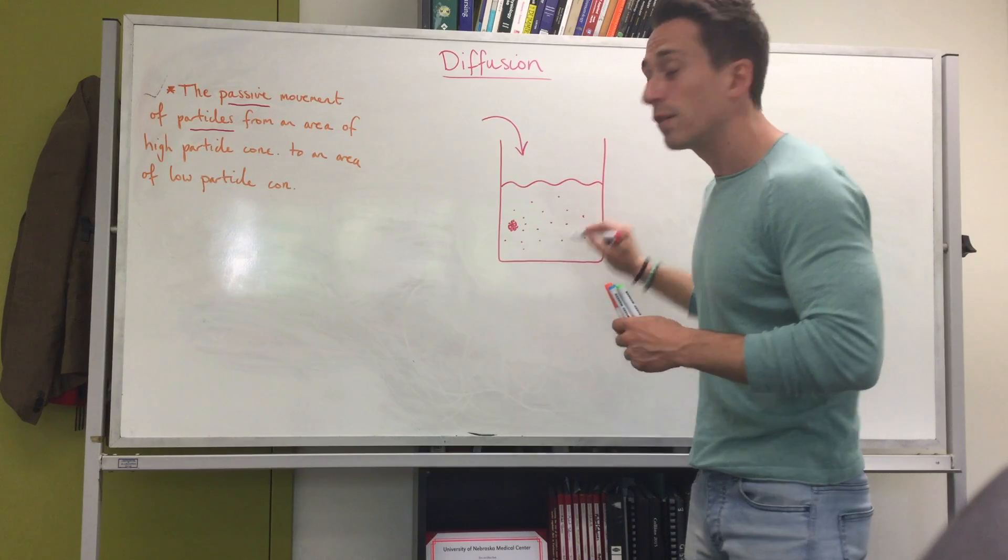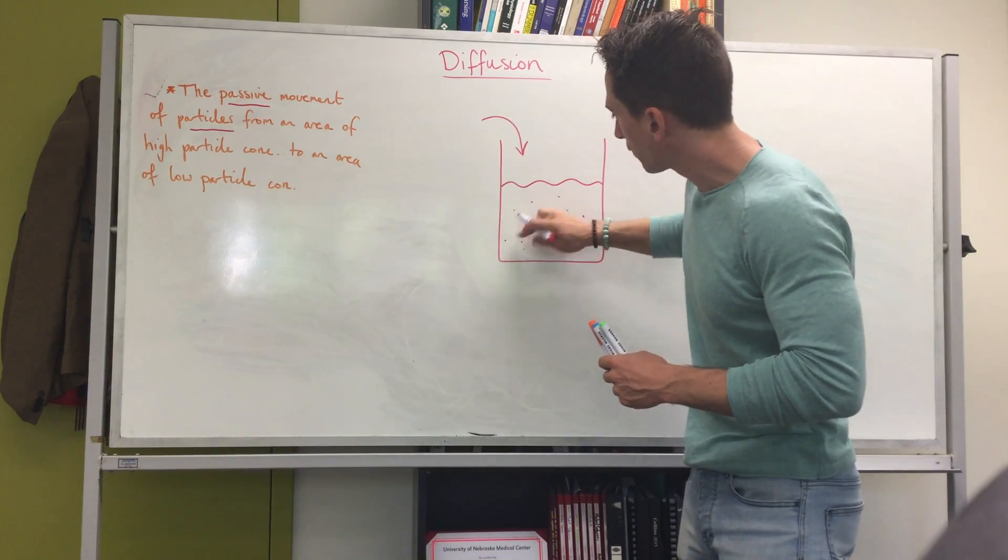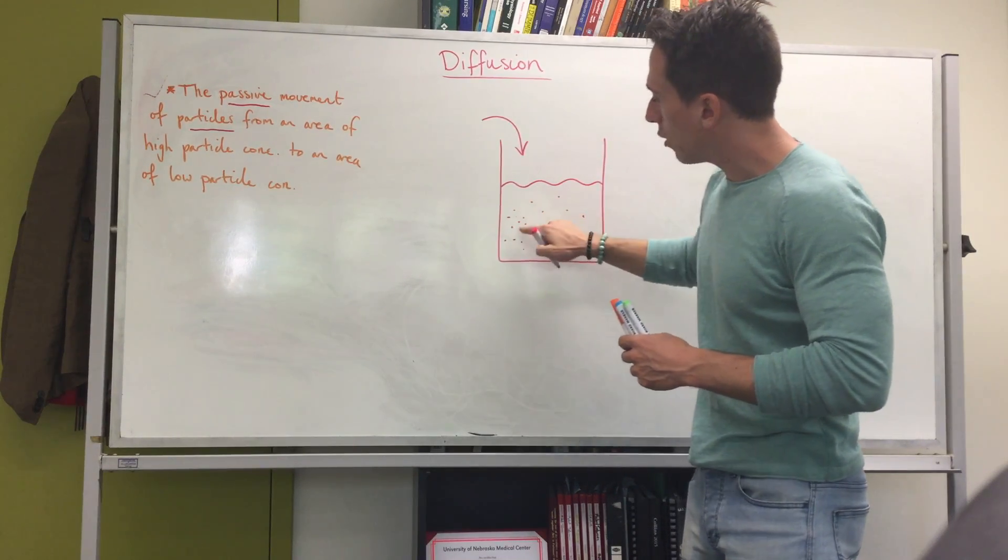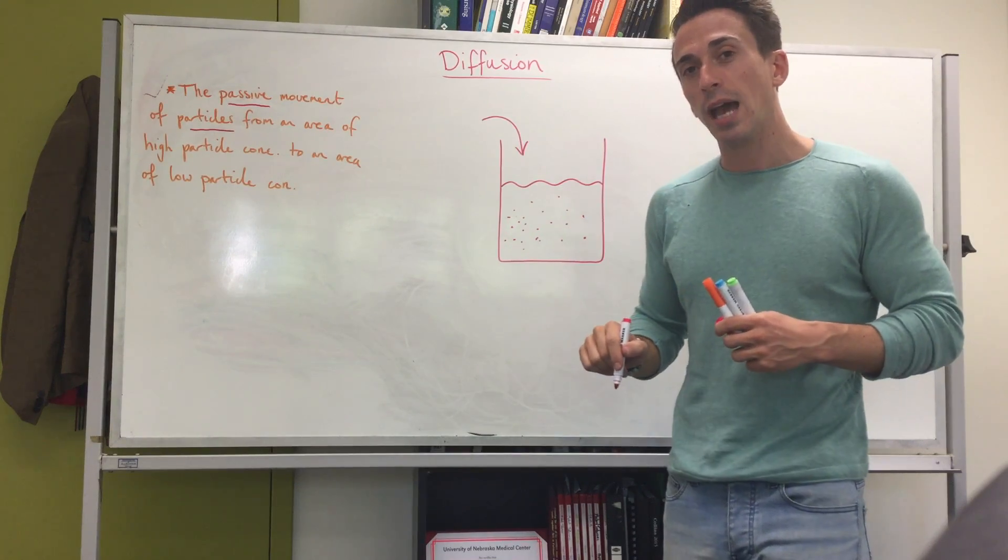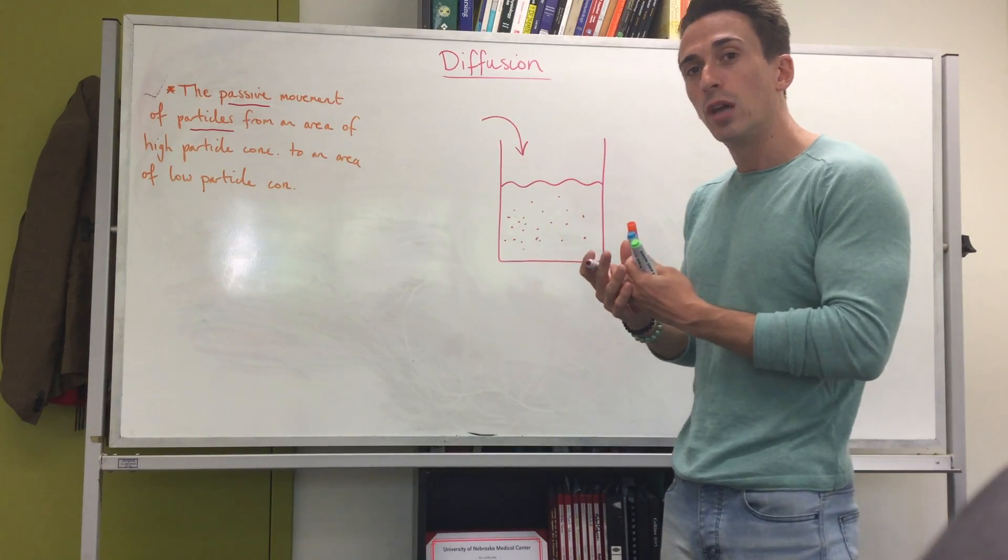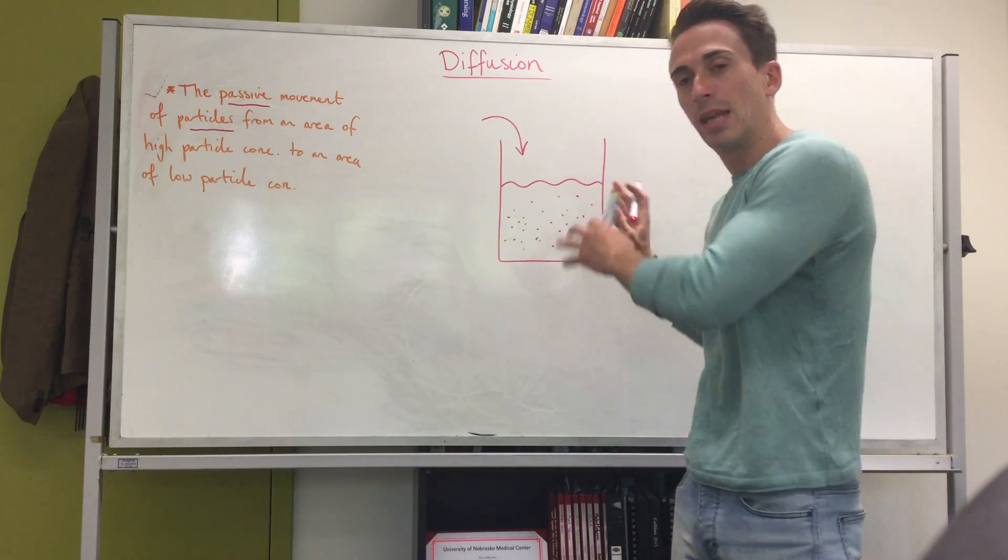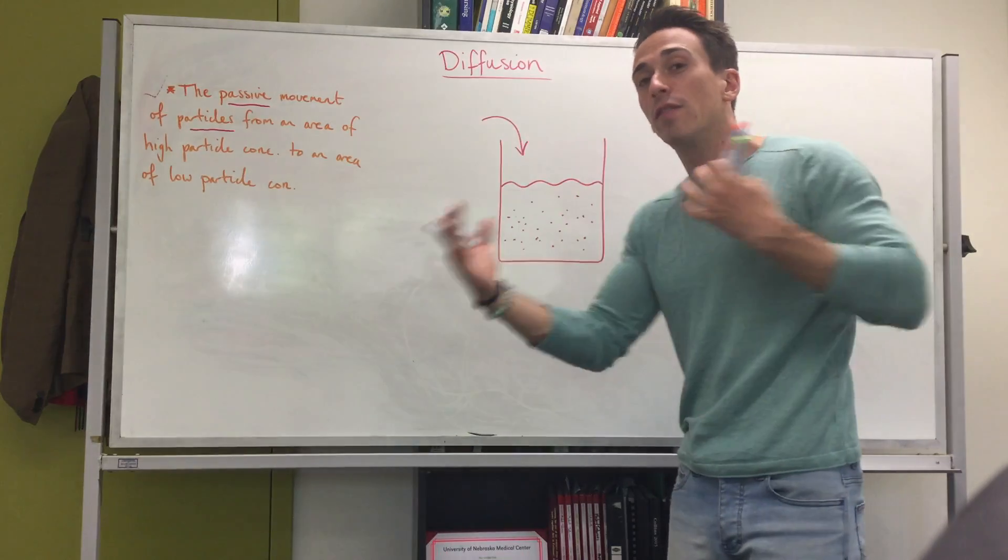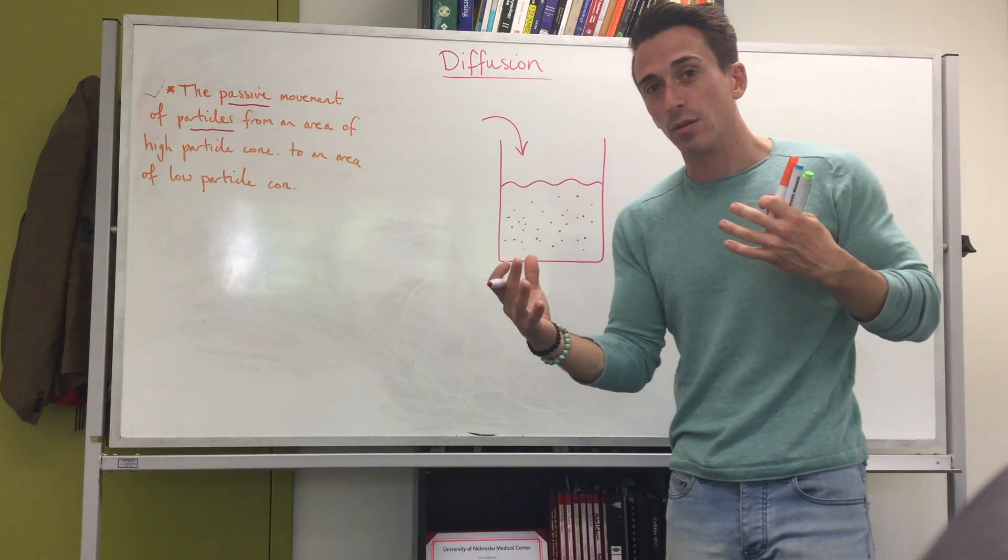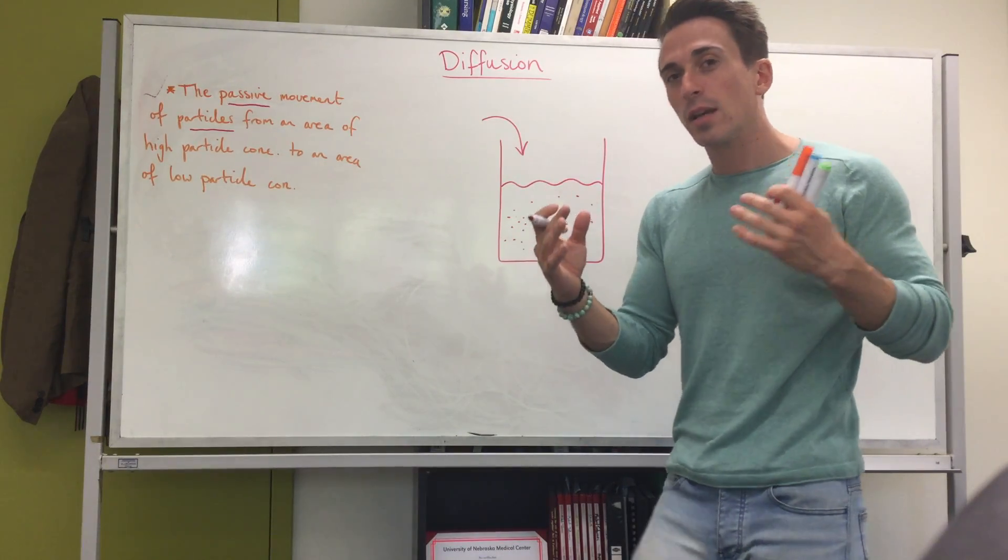Until given sufficient amount of time, that area of high concentration that you originally had, the particles moved away to areas of low concentration until there's an area of even distribution of those particles.